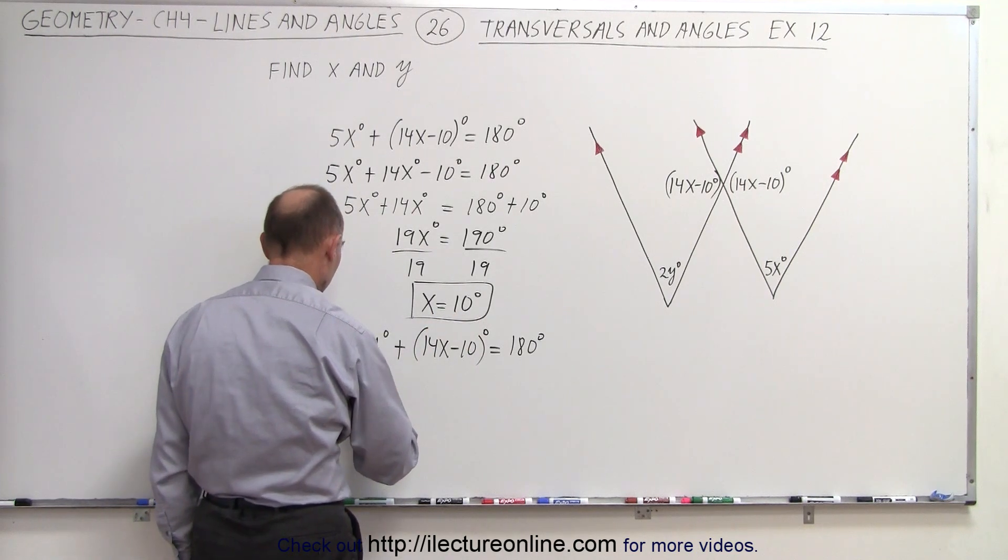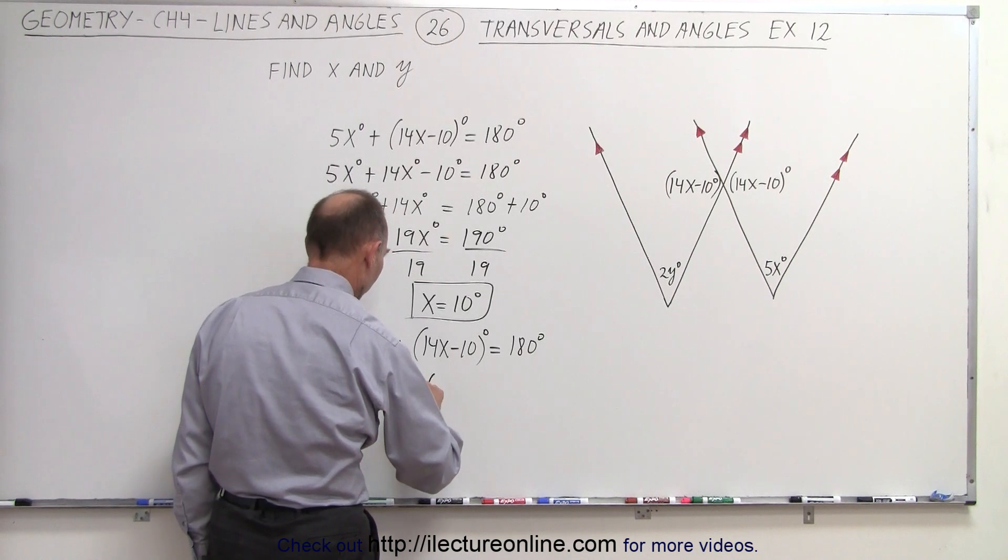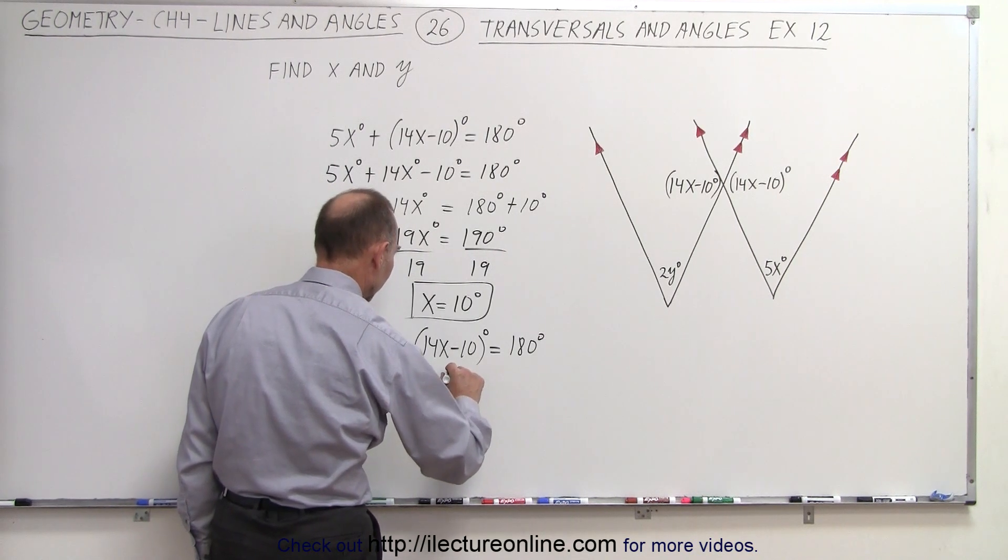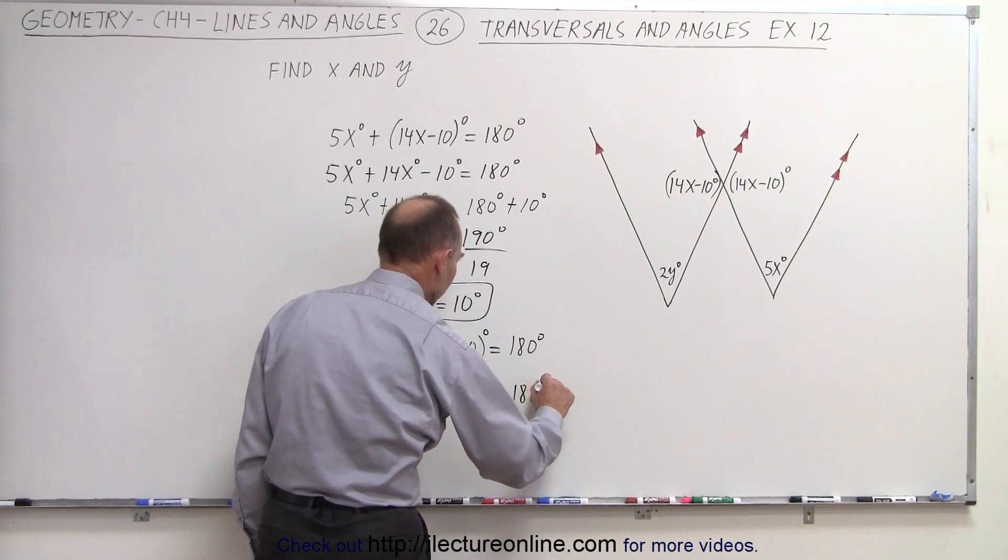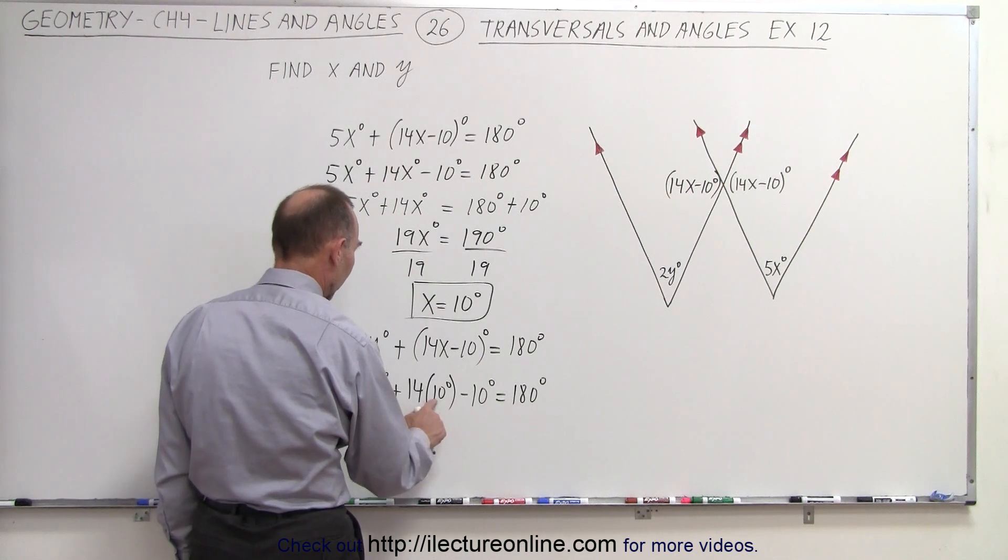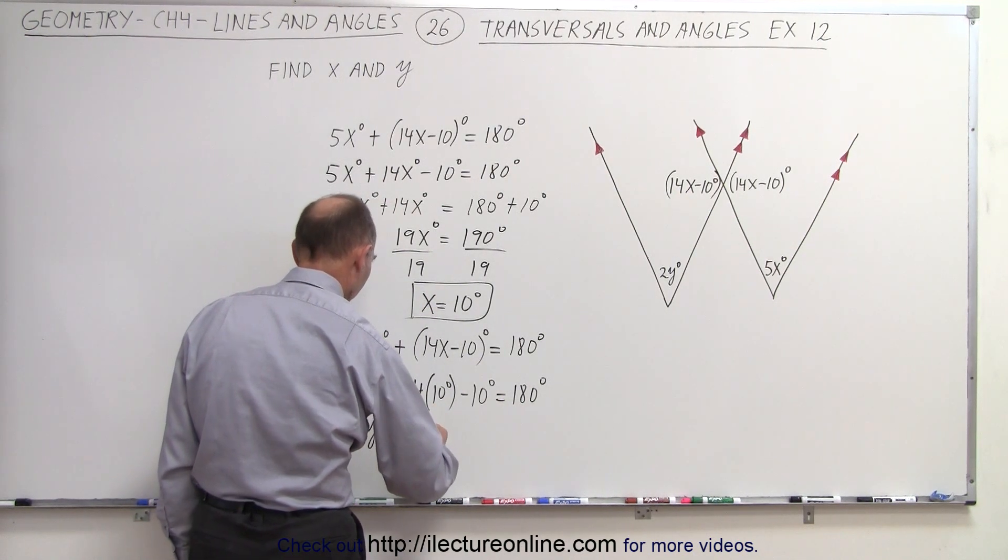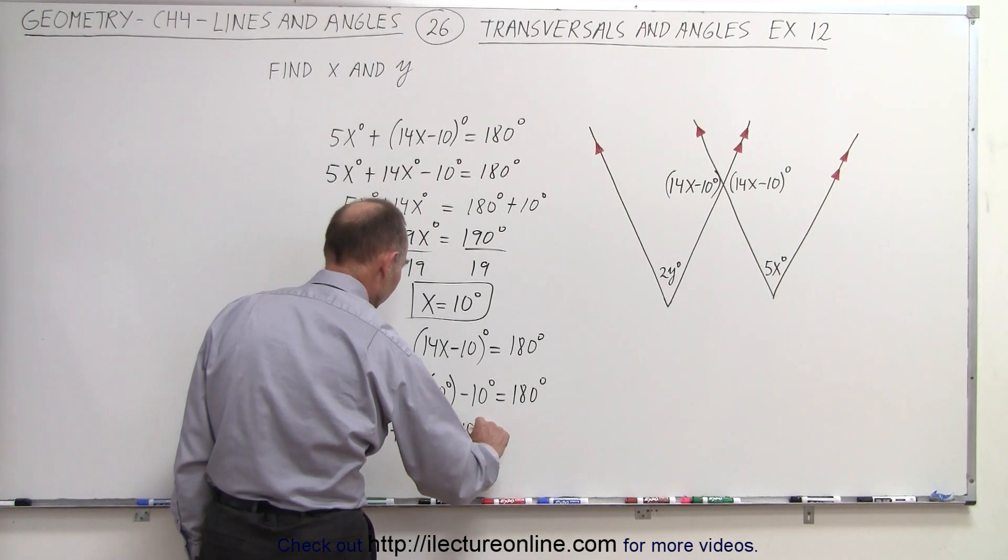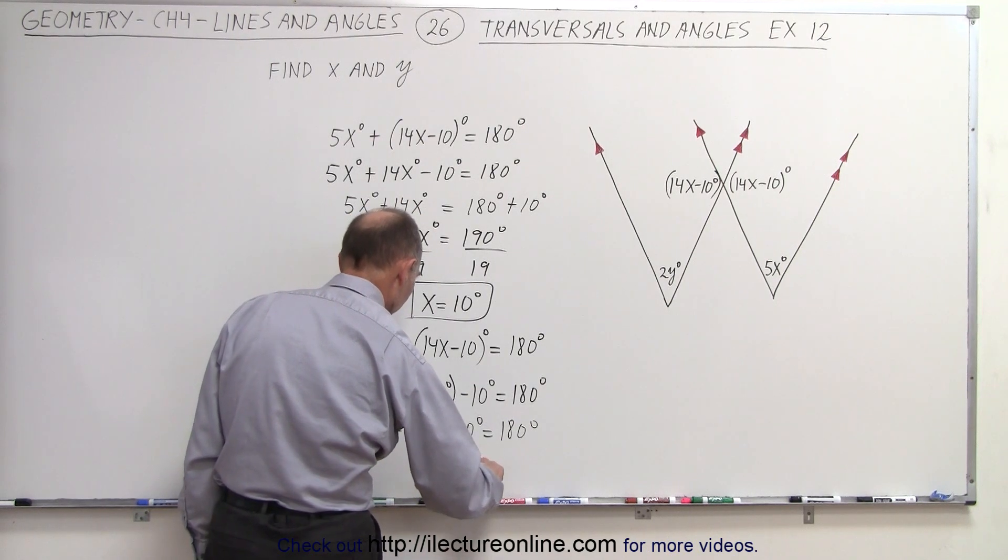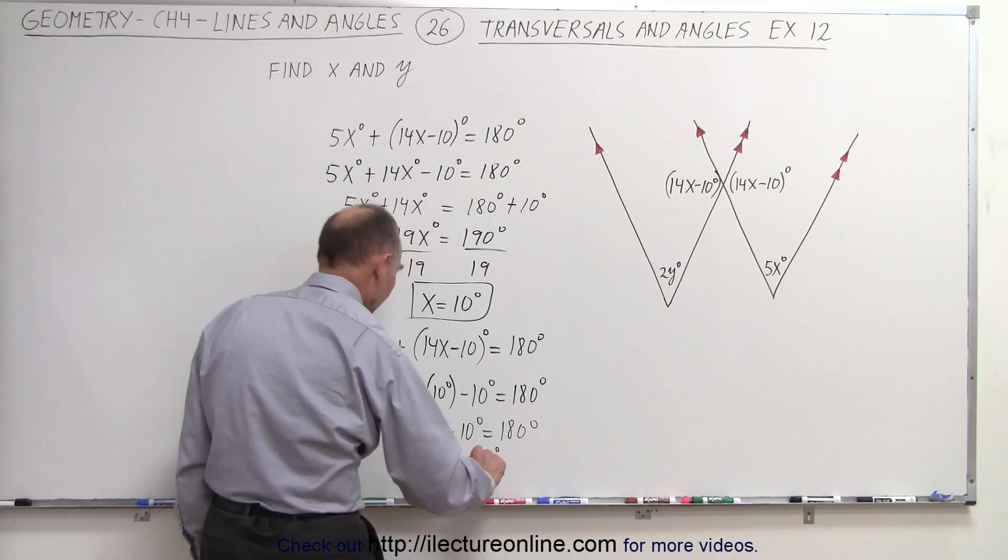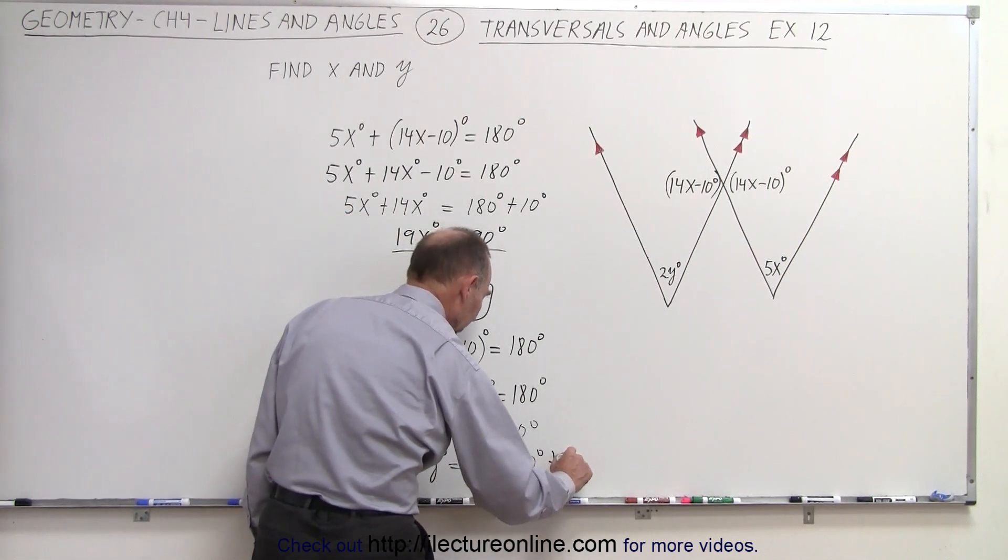And notice 14x, well, since x is 10 degrees, this can be written as 2y degrees plus 14 times 10 degrees minus 10 degrees is equal to 180 degrees. So we have 140 degrees, we can write this out, 2y plus 140 degrees minus 10 degrees is equal to 180 degrees, or 2y degrees equals 180 degrees minus 140 degrees, by moving this to the other side, and plus 10 degrees.